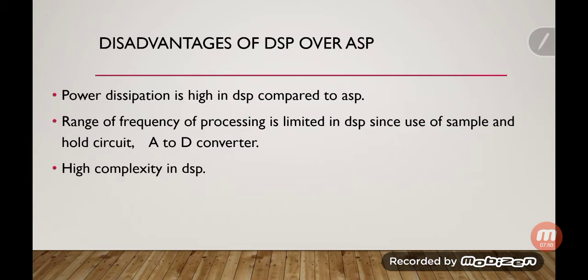There are also some disadvantages of DSP compared to ASP. First, power dissipation is high in DSP compared to ASP — this is the biggest concern. In ASP, only resistors consume more power while inductors and capacitors consume less, but in DSP, transistors consume high power. This is a major concern in fields like medicine, where an implanted electronic component should consume very little power so the battery lasts as long as possible.